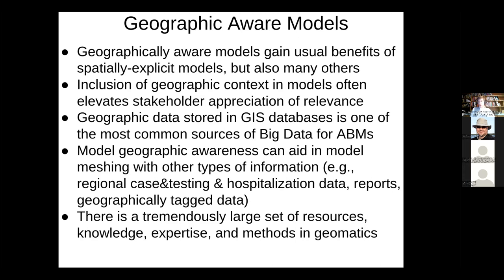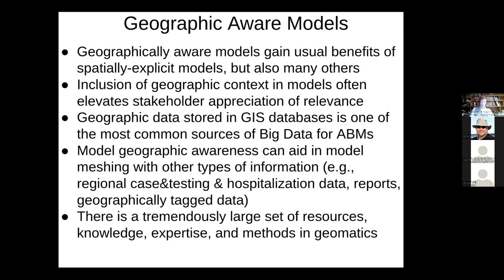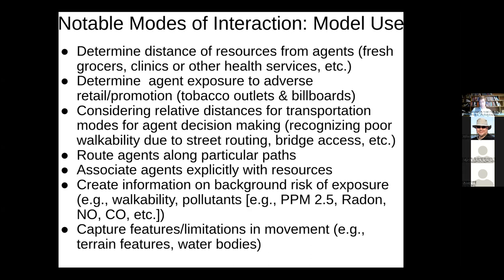There's also a huge amount of resources, expertise, knowledge, libraries, and databases in the broad geomatics area — geographic information systems — that you can leverage together with modeling in powerful ways. You could incorporate pollutant levels, walkability indices over different regions, bus routes, availability of grocery stores offering fresh fruits and vegetables, or recreational facilities. You can start to relate these to the models. Individually they may be modest, but collectively the implications can be profound and very significant.